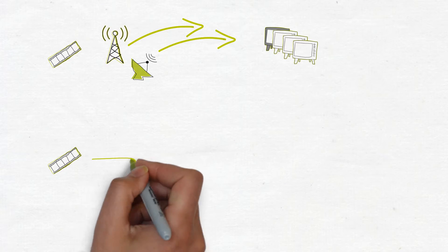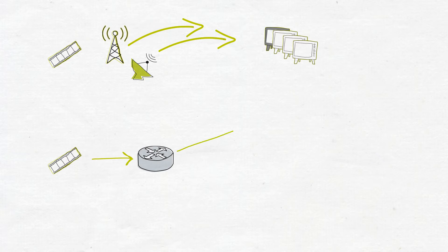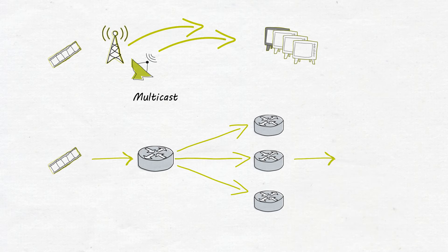When the first generation of IP TV came along, it was much the same. The show was sent as a stream of data packets over an IP network. A single stream was sent for each channel, and the data was duplicated at every network branch. This is called multicast traffic, and the viewer still effectively tuned in to the channel they wanted to watch.